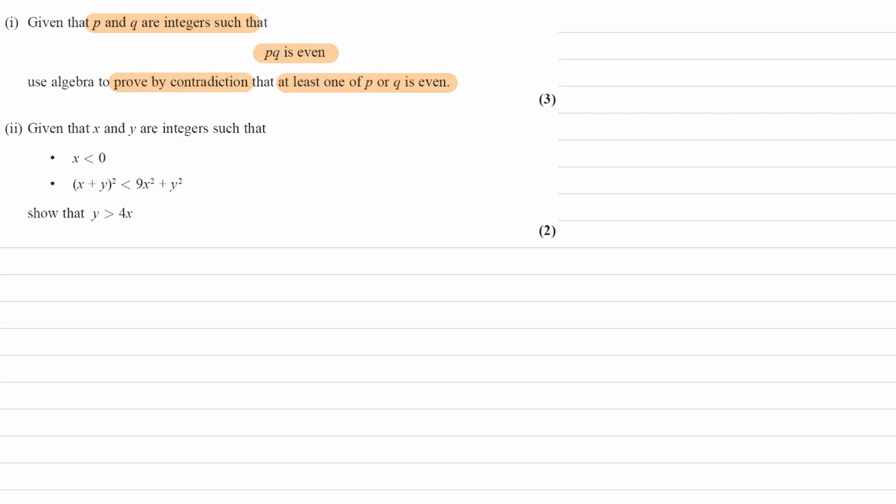Alright, so first thing, we get our assumption if we're doing proof by contradiction, and the negation for this statement would be, if PQ is even, if P and Q are integers, then neither P nor Q is even, or both P and Q are odd.